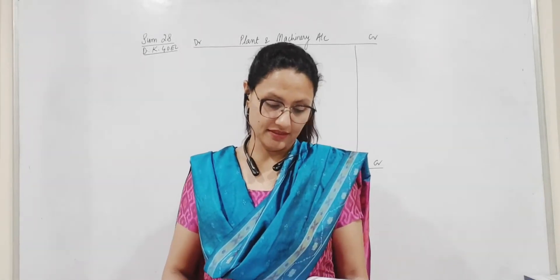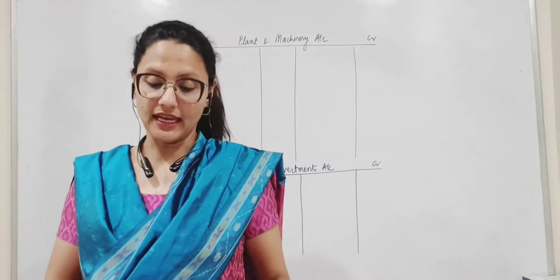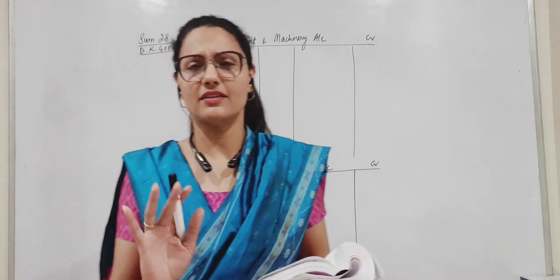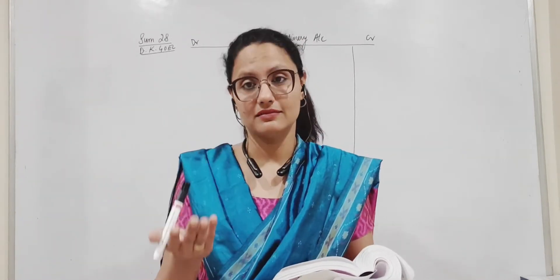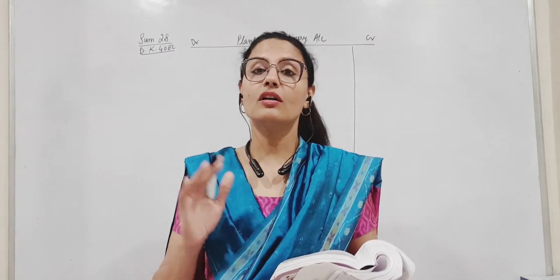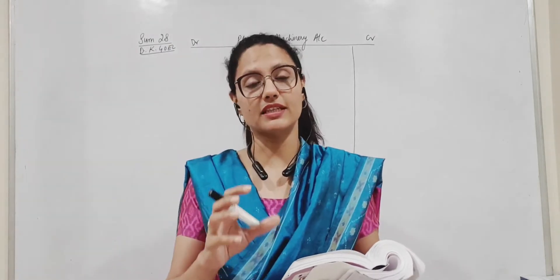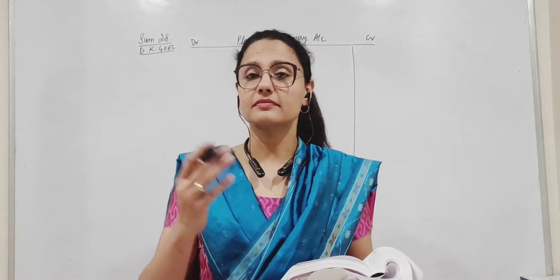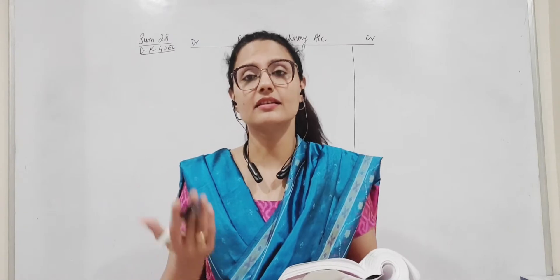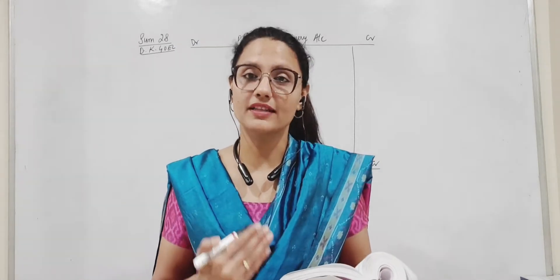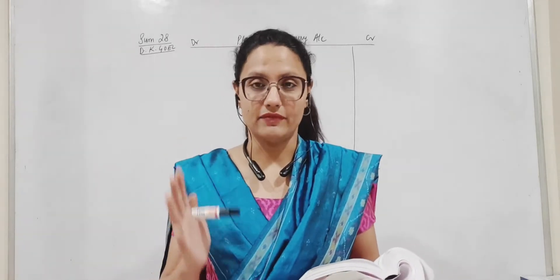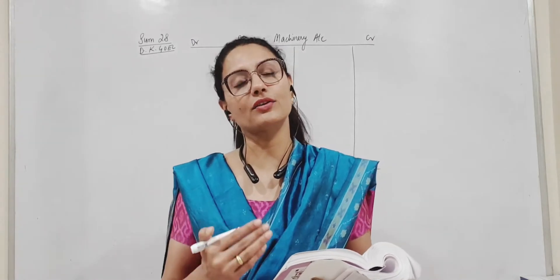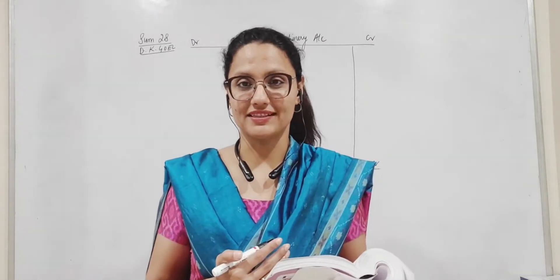The sum says from the following information calculate cash flow from investing activities. We want to discuss what are investing activities. Investments in fixed assets or long term investments. That amount that you spent for purchase of assets that's outflow of cash and if you sell that's inflow. So that is what we are dealing in investing activities. Of course related income from investments is also a part of cash inflow from investing activities.